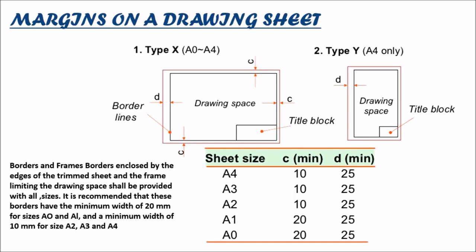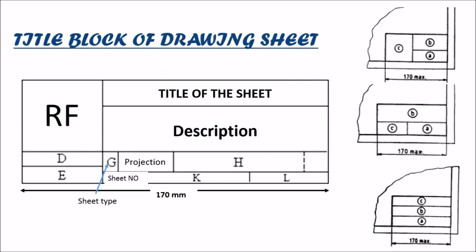The lower right hand side corner of a drawing sheet is always reserved for the title block. The title block should always contain a representative factor, title of the sheet, description of the sheet, projection in which sheet is made, sheet number and the sheet type. It is also included with the signature of the designer and the checker.